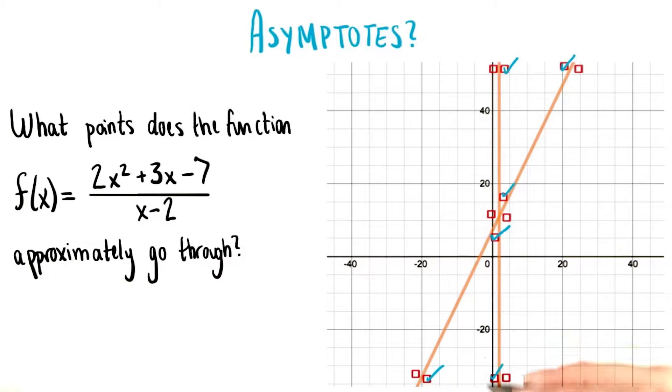The function will pass through these points here and these points here. It won't be at all in this part of the graph or in this part of the graph.